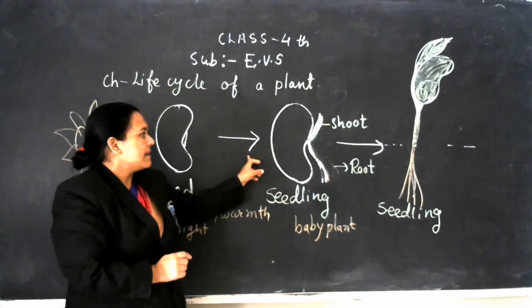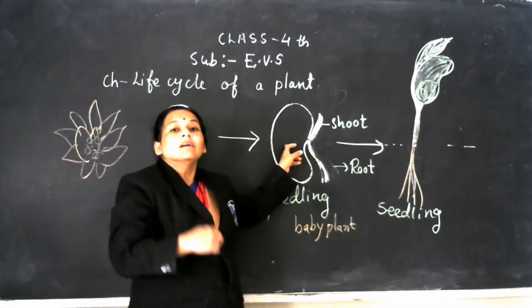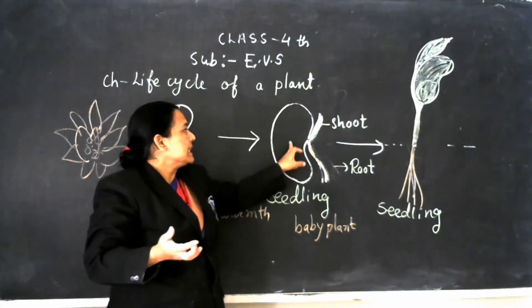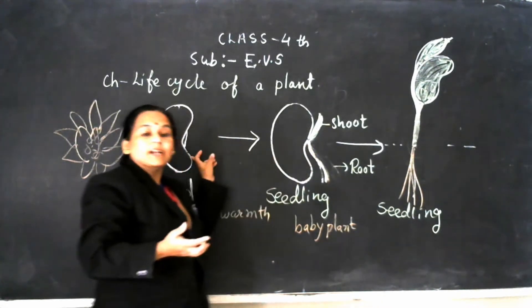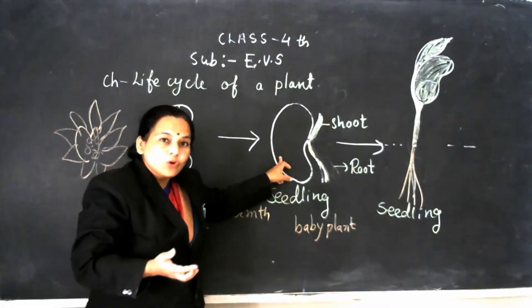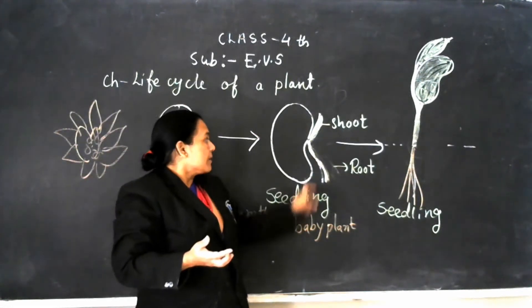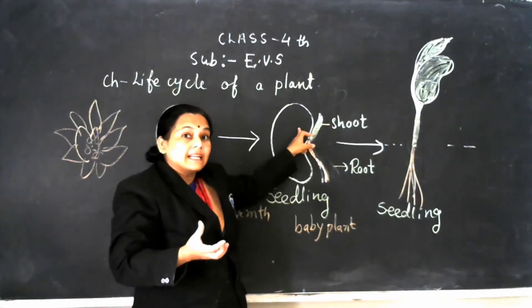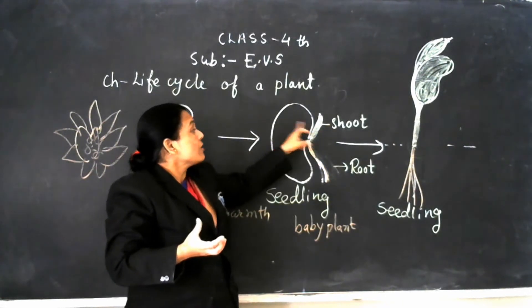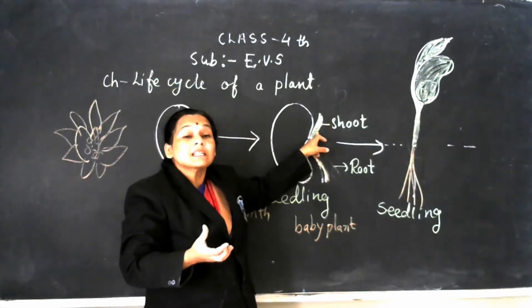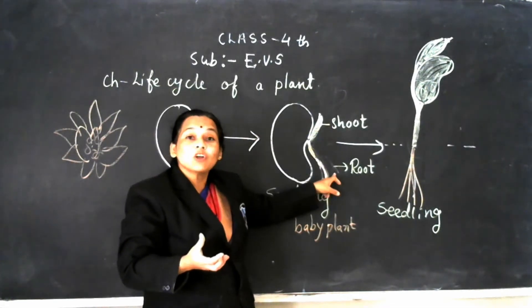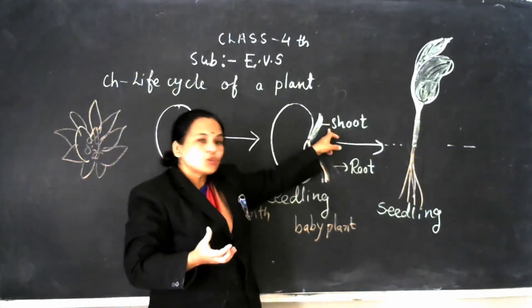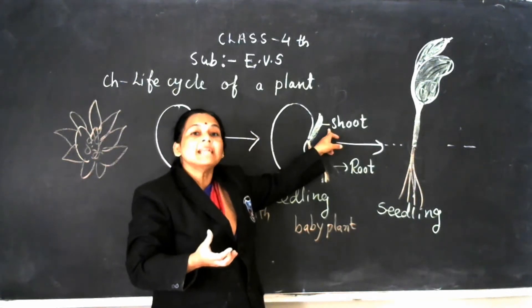Then after getting maturation in the next stage, when the seed gives stored food to the plant that grows from that seed, using this food, the root comes out first. Do you know who comes out first from the seed? This is root. And after that, shoot comes out from that seed.